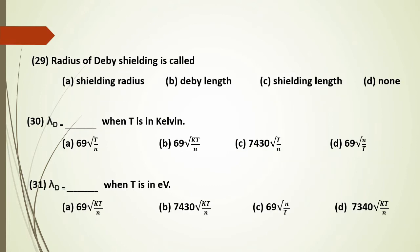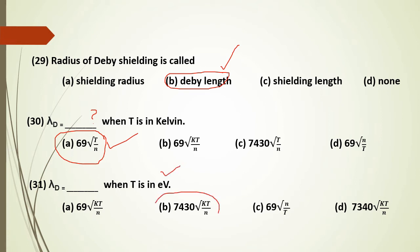The characteristic distance of Debye shielding is called the Debye length, denoted lambda_D. When temperature T is in Kelvin, lambda_D = 69 × sqrt(T/n). When temperature is in electron volts, lambda_D = 7430 × sqrt(T/n).